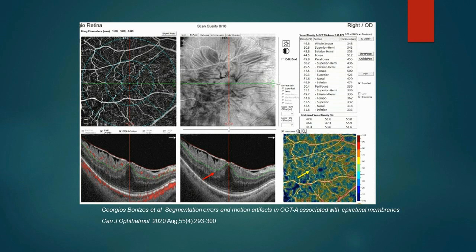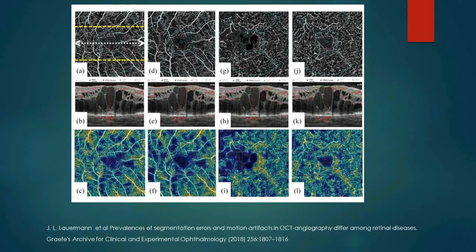In the same patient, when the segmentation is corrected manually, you can see the correct leveling of the IPL layer shown by the red arrow, and in the corresponding OCT angiography flow map, there is disappearance of the large areas of flow void that were seen earlier, shown here by the yellow arrow.